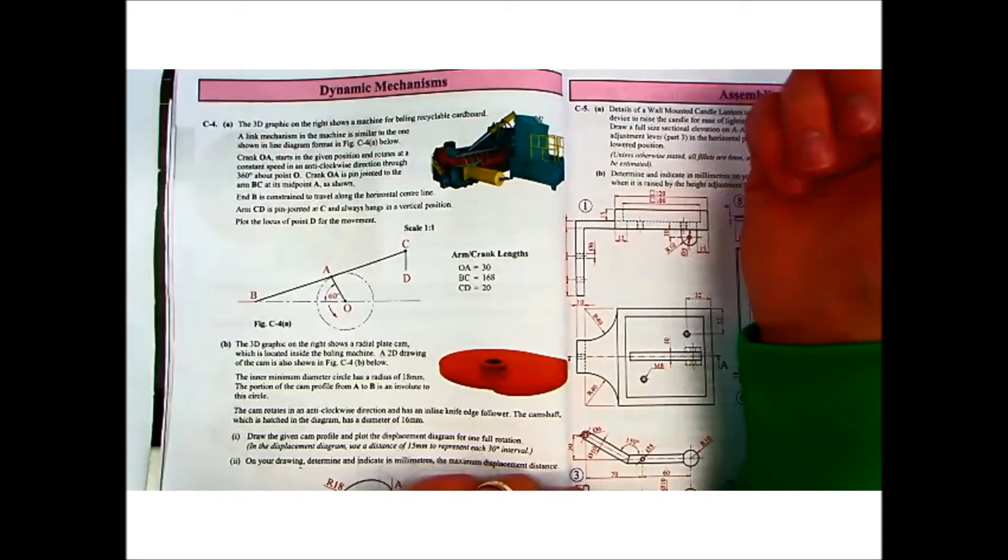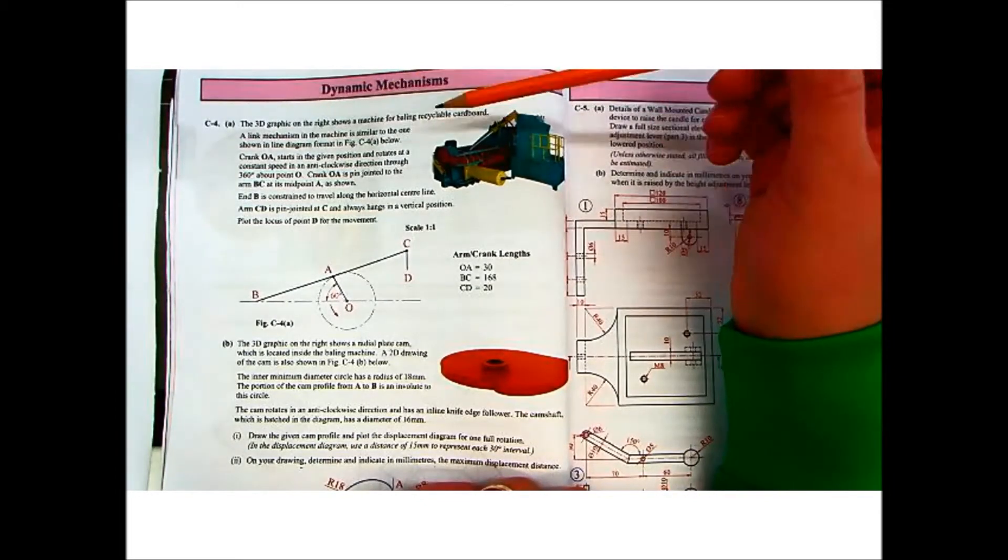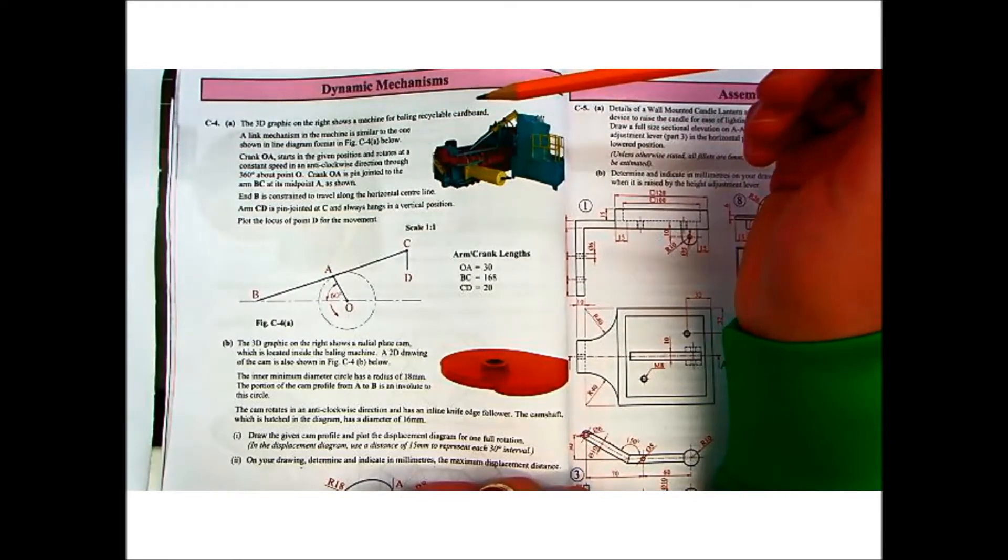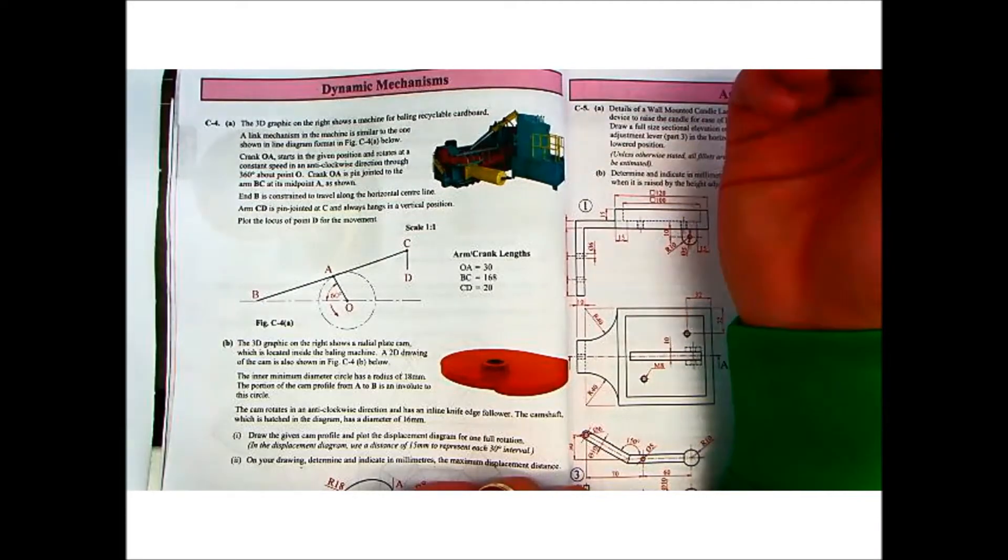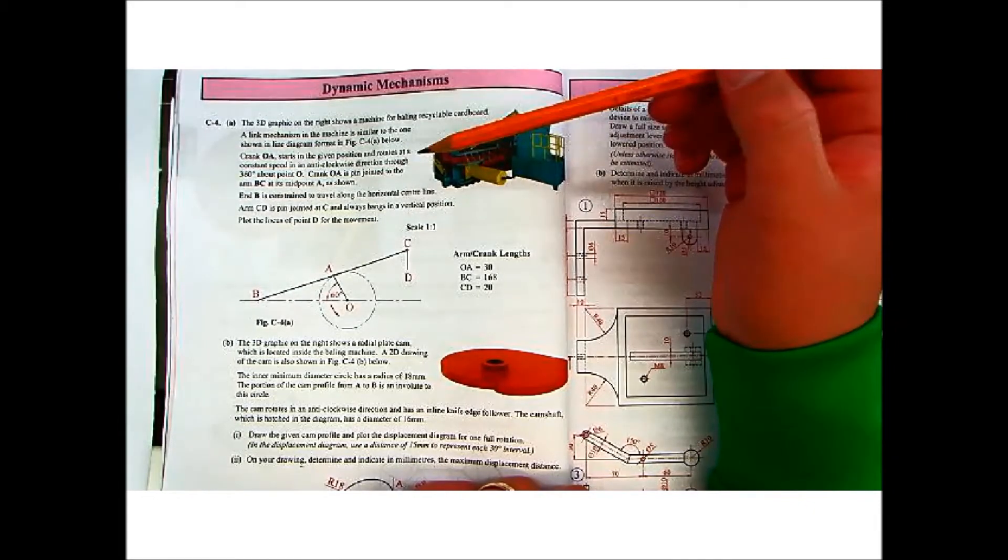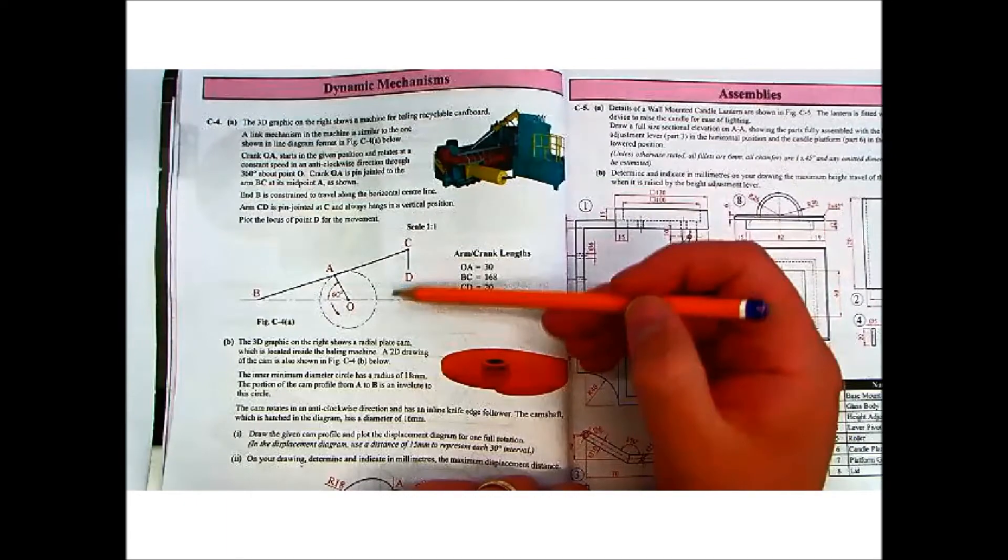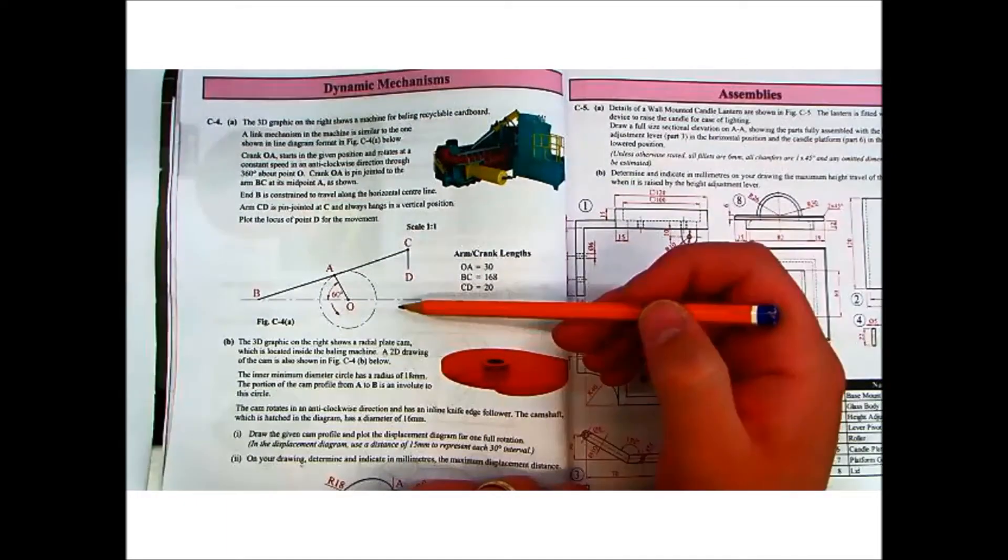So let's read through the question. C4 Part A. The 3D graphic on the right shows a machine for baling recyclable cardboard. A link mechanism in the machine is similar to the one shown in diagram format in figure C4A below. So what we have is our line diagram here to represent a mechanism.